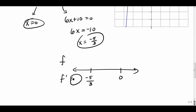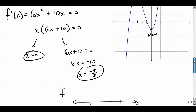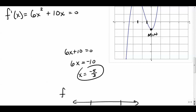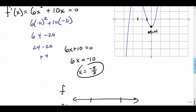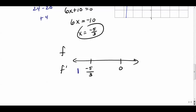Pick a number to the left of negative one point six six six — let's choose negative two — and plug into the first derivative: six times negative two squared plus ten times negative two equals twenty-four minus twenty equals positive four. So the derivative is positive there, meaning the function is going uphill to the left of negative five-thirds.